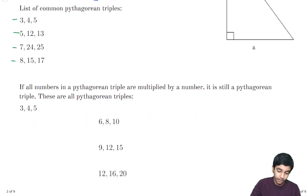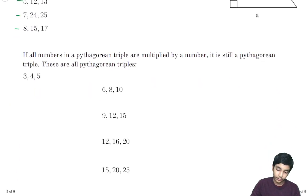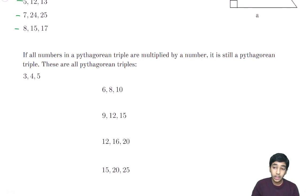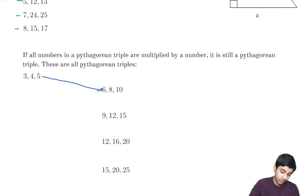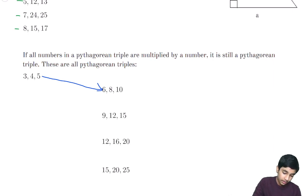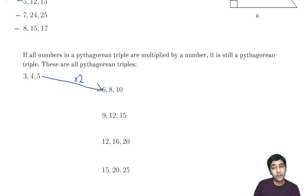There are also some special properties of Pythagorean triples. If all the numbers in a Pythagorean triple are multiplied by a number, it's still a Pythagorean triple. For example, in 3, 4, 5, if you multiply by 2 to each of the legs and hypotenuse of the triangle, we get the Pythagorean triple 6, 8, 10. And we can verify that also satisfies the Pythagorean theorem.